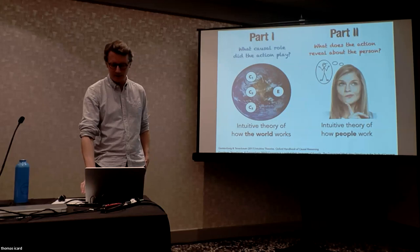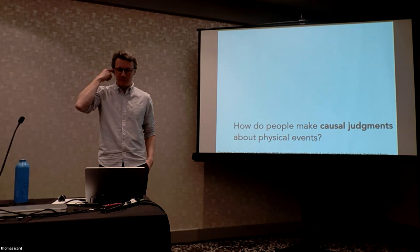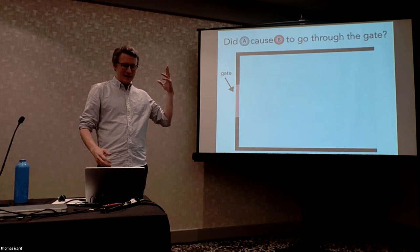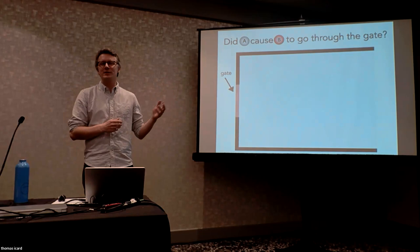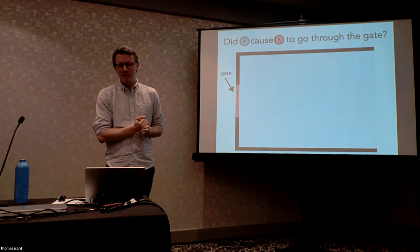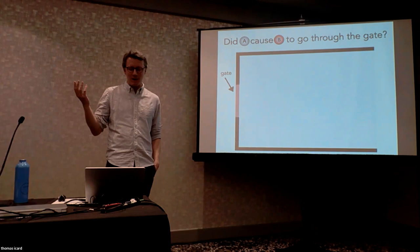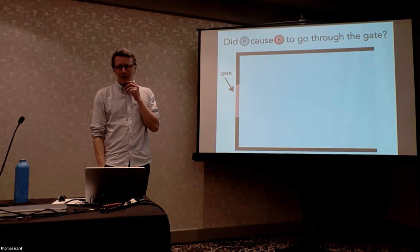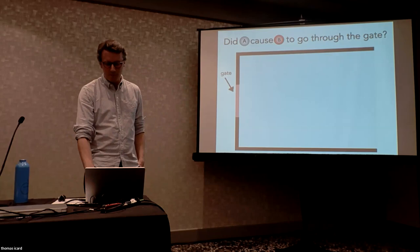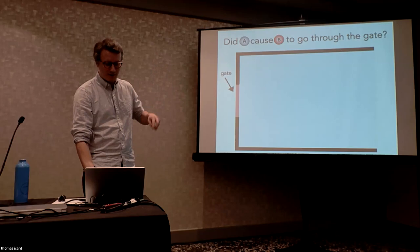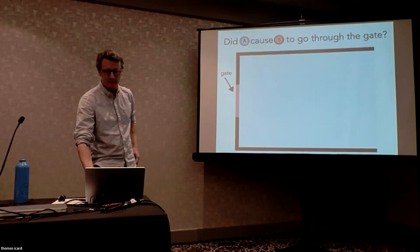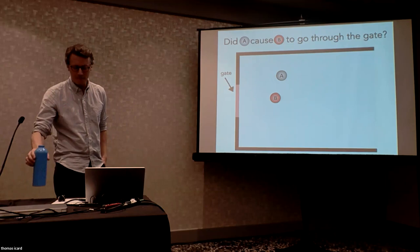How do people make causal judgments about physical events? I got into physics because at the time I started being interested in these questions, physics engines had just come around. I was at a postdoc with Josh Tenenbaum at MIT, and Angry Birds was happening on your phone. This led to a revival of work on intuitive physics in psychology, because it was now much easier to create physically realistic stimuli. I came up with a billiard-ball setup — there'll be two balls coming into the scene, and I'll ask whether ball A caused ball B to go through the gate on the left-hand side.